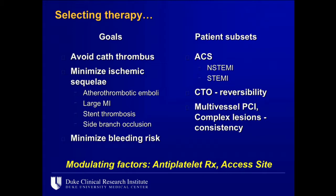There may also be slightly different pragmatic goals depending on the procedure. For a CTO, you want a reversible agent because perforation risk may be higher. For multivessel or complex PCI where you're in the lab for a while, you need consistency of antithrombotic effect — you don't want intraprocedural thrombus because the agent hasn't been redosed. Safety of these agents is also influenced by concomitant strategies like antiplatelet therapy and, importantly, access site. A large randomized trial comparing bivalirudin versus heparin — predominantly radial access — is expected to be presented at ESC from the Swedish registry.